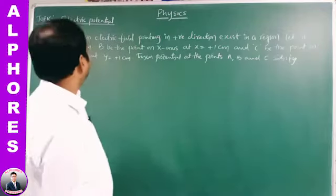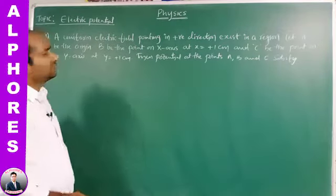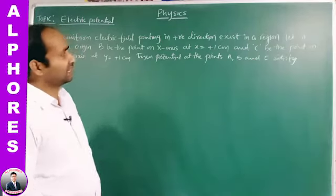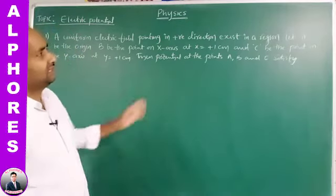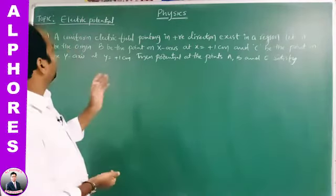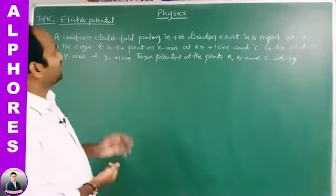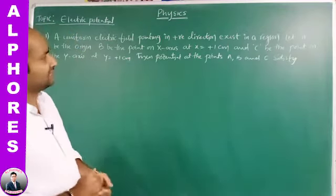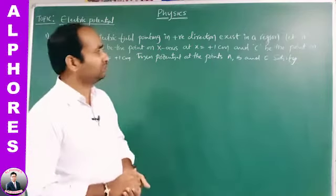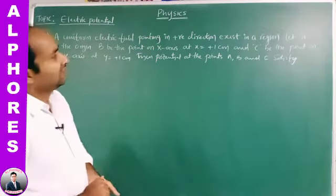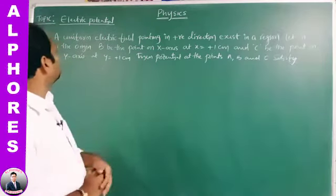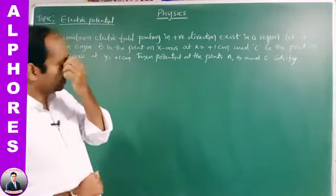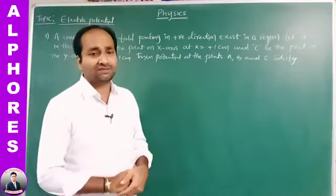Here we have a problem: a uniform electric field pointing along the positive x-axis. A is a point at the origin, B is a point on the x-axis at x = +1 cm, and C is a point on the y-axis at y = +1 cm. Then we determine which condition the potential at points A, B, and C satisfies.